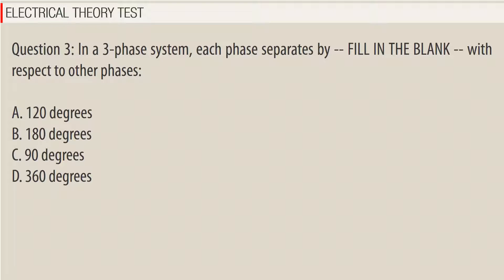Question 3: In a three-phase system, each phase is separated by — fill in the blank — with respect to other phases. A. 120 degrees, B. 180 degrees, C. 90 degrees, D. 360 degrees.